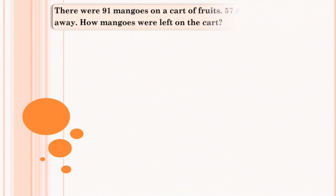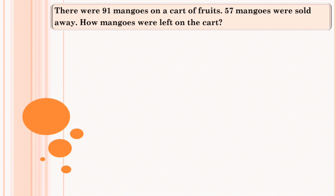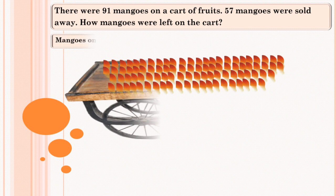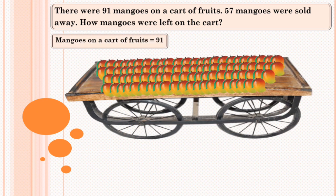Question number 3. There were 91 mangoes on a cart of fruits. 57 mangoes were sold away. How many mangoes were left on the cart? Mangoes on a cart of fruits is 91.